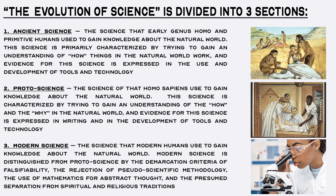Two: proto-science, that is the science that Homo sapiens used to gain knowledge about the natural world. This science is characterized by trying to gain an understanding of the how and the why in the natural world, and evidence for this science is expressed in writing and in the development of tools and technology.